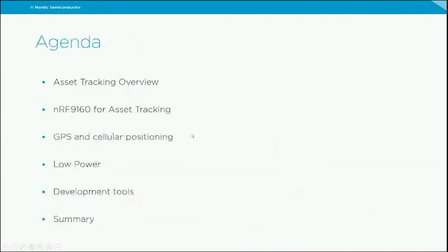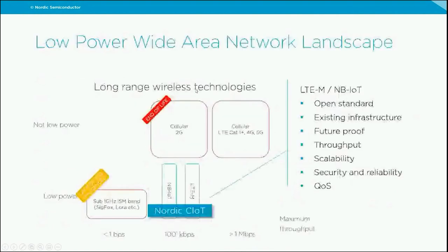Today we're going to start with a short overview on asset tracking from a cellular connectivity perspective, then focus on the NRF9160 and how it is optimized for asset tracking applications. I'll spend most of the time on positioning features since that's crucial for asset tracking, and then cover new improvements on the low-power side, development tools, and how you can get started with your own asset tracker design.